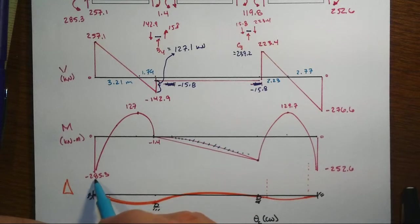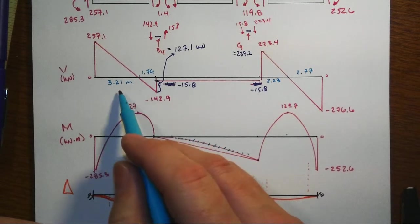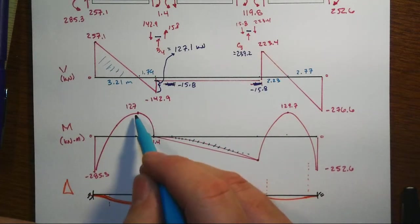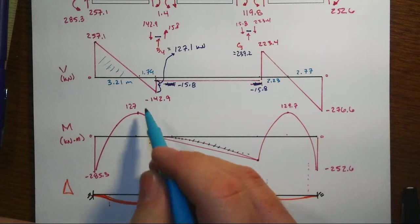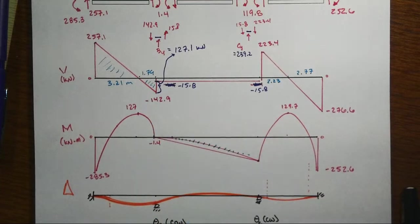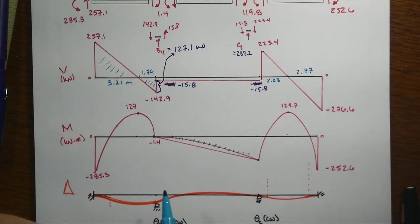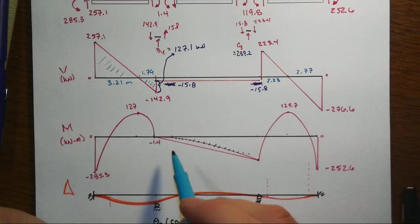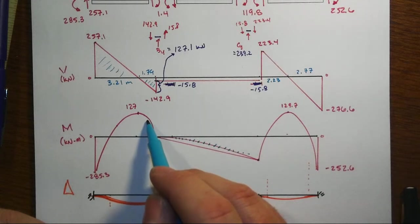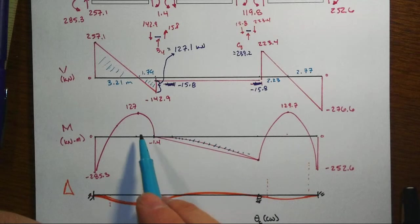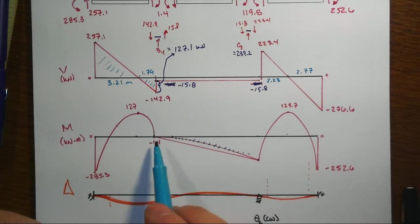We start off at the negative 285.3. We come over 3.21 meters, find that change in the moment by looking at the area over here. We're at about 127, and then we drop back down to almost close to zero. One of the reasons I had a really difficult time trying to draw this moment diagram was because I chose a scale that was too large, and that made it very difficult to use my French curve to get that in very well. I really need to redo this with a much smaller scale.